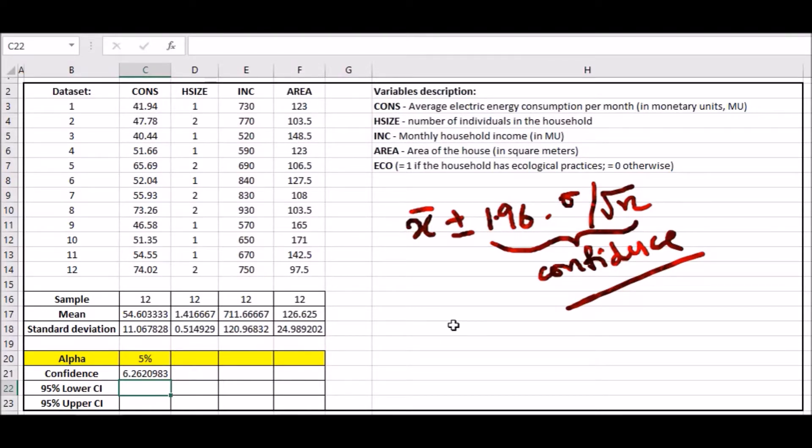Now for the lower bound: the lower is simply going to be x-bar minus the confidence value.